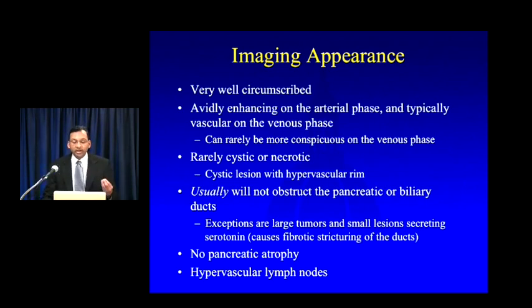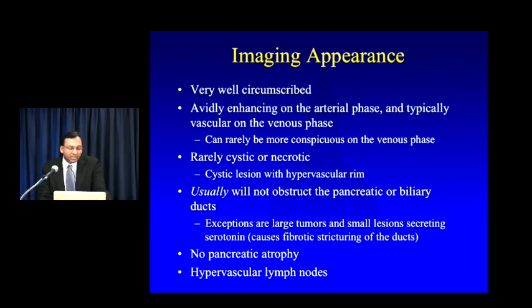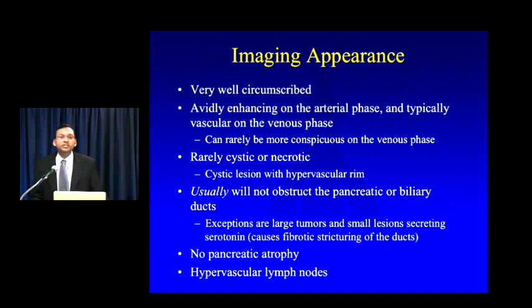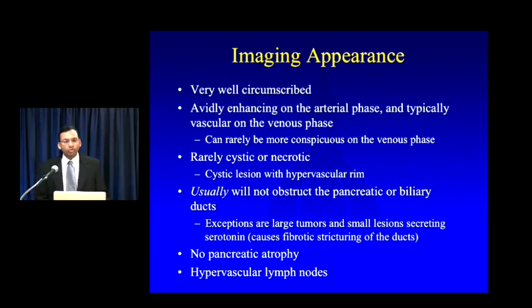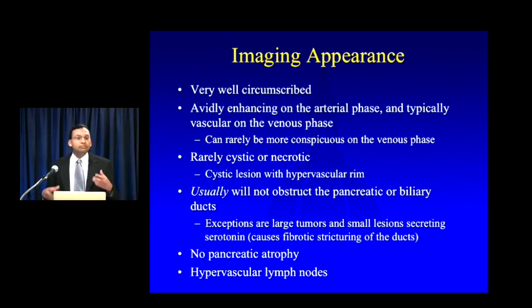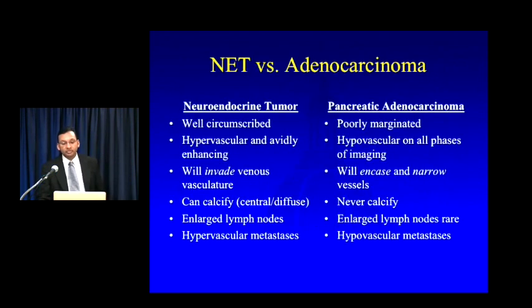NETs can rarely be cystic or necrotic — so cystic they can mimic IPMN — but in those cases with a significant cystic or necrotic component, there's almost always a surrounding rim of hypervascular soft tissue. Unlike adenocarcinoma, neuroendocrine tumors typically will not obstruct the pancreatic or biliary ducts, though large tumors can cause obstruction, and a small category of NETs secreting serotonin and similar hormones can cause fibrotic stricturing of the ducts. Upstream pancreatic atrophy is almost never seen, and it is not uncommon to see big bulky local regional nodes that are often hypervascular on the arterial phase.